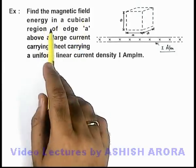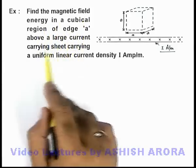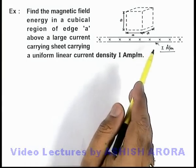In this example, we are required to find the magnetic field energy in a cubical region of edge a, above a large current carrying sheet carrying a uniform linear current density I ampere per meter.